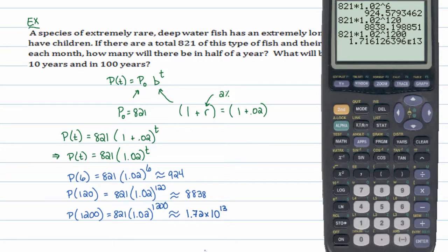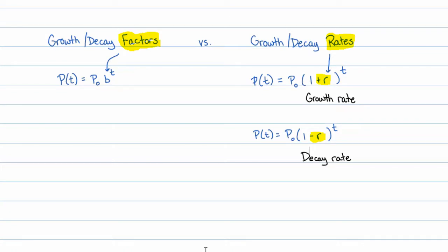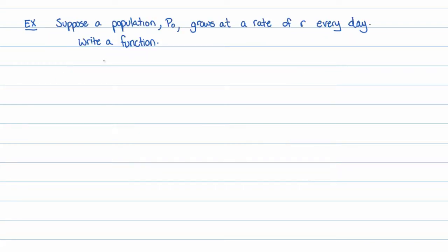So there are two basic forms of an exponential function: either you're given a growth factor explicitly, like tripling, or you're given a growth or decay rate using 1 plus or minus r. We've dealt with both. I want to show you why the growth rate formula is the way it is, rather than just having you accept it.